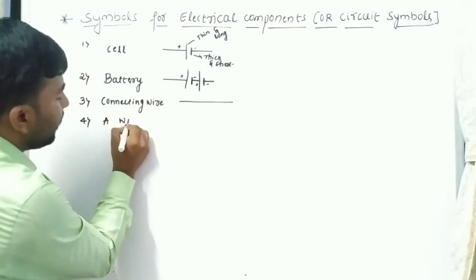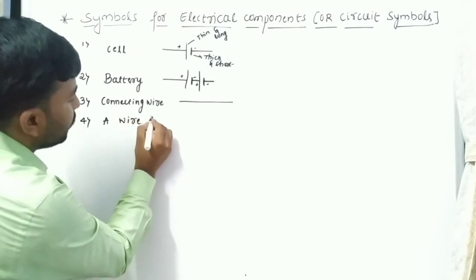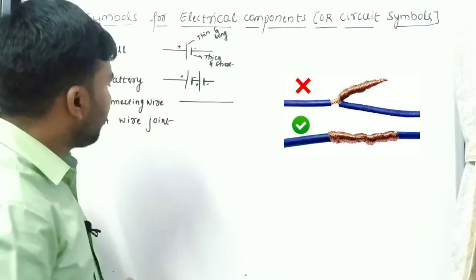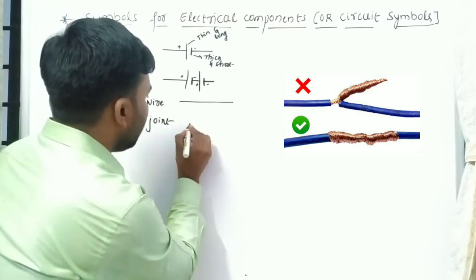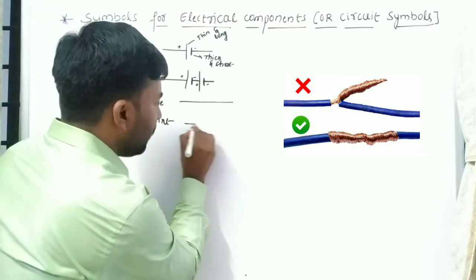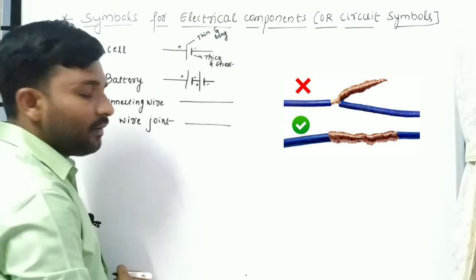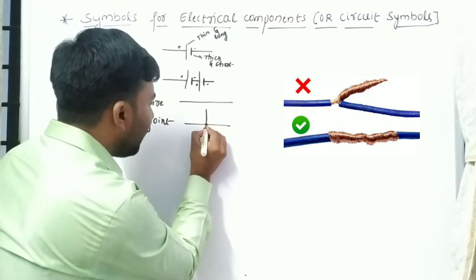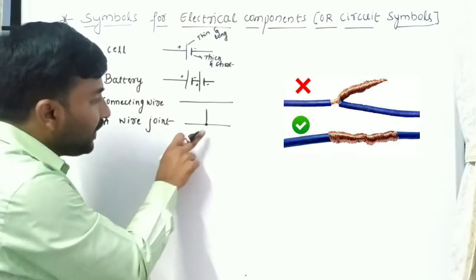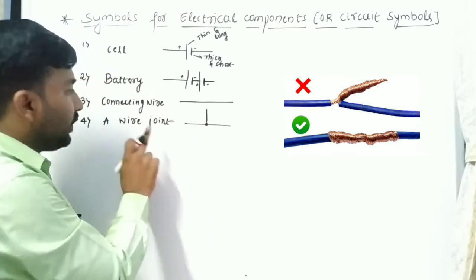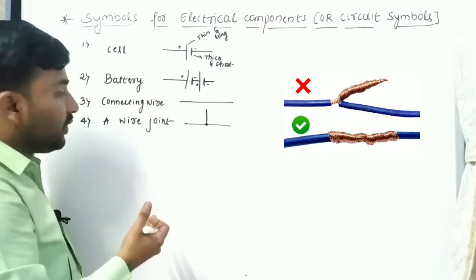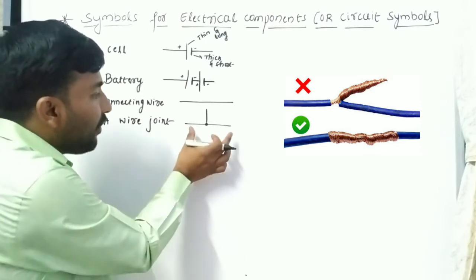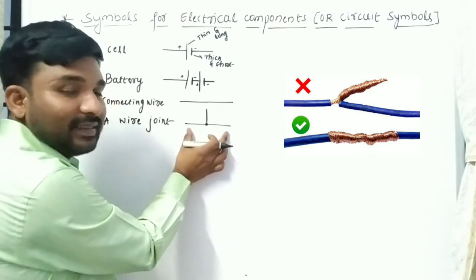The fourth one is a wire joint. If I take one wire and join it with another wire at a point, then to represent that junction we use a dot symbol — that is the wire joint symbol.